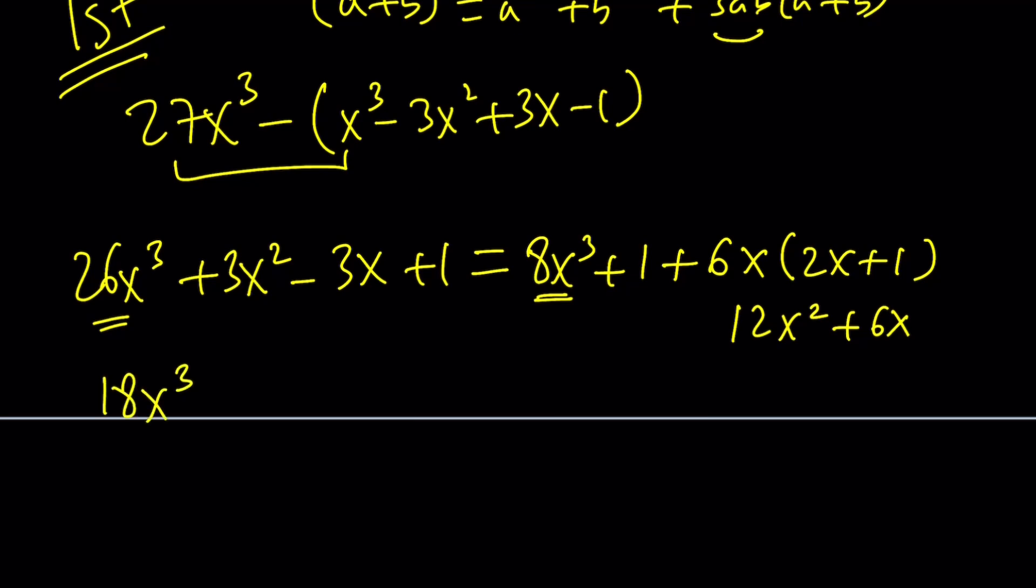And then we have 3x squared minus 12x squared, that's going to be minus 9x squared. Minus 3x plus 6x, that's going to be minus 9x. And best of all, 1 is going to cancel out. Isn't that awesome?